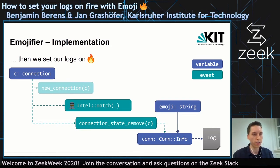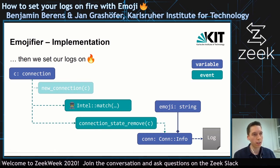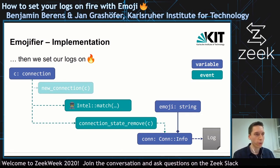What we had to do is find a way to get that information into the connection state remove event and then put it there. So we extended the connection with an emoji trail — another string — which allowed us to also handle other events, in that case the intelligence match event.